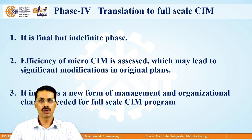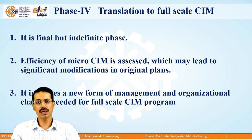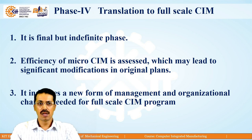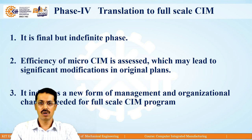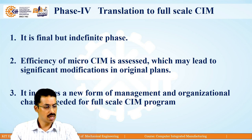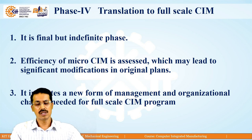The last phase, phase four, is translation to full scale CIM. Once we have implemented CIM on a small scale and checked the results, if they are positive we can translate it to the full scale or the entire industry. The efficiency of micro CIM is assessed, which may lead to significant modifications in the original plans. Any required changes are incorporated into the revised CIM implementation. This indicates a new form of management and organizational changes needed for a full scale CIM program, completing the full factory CIM implementation.